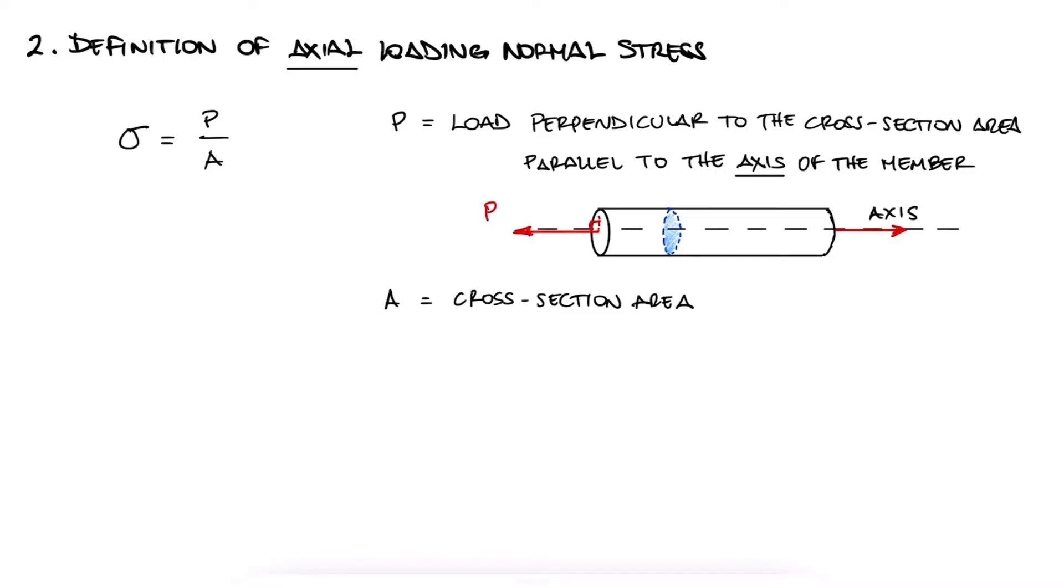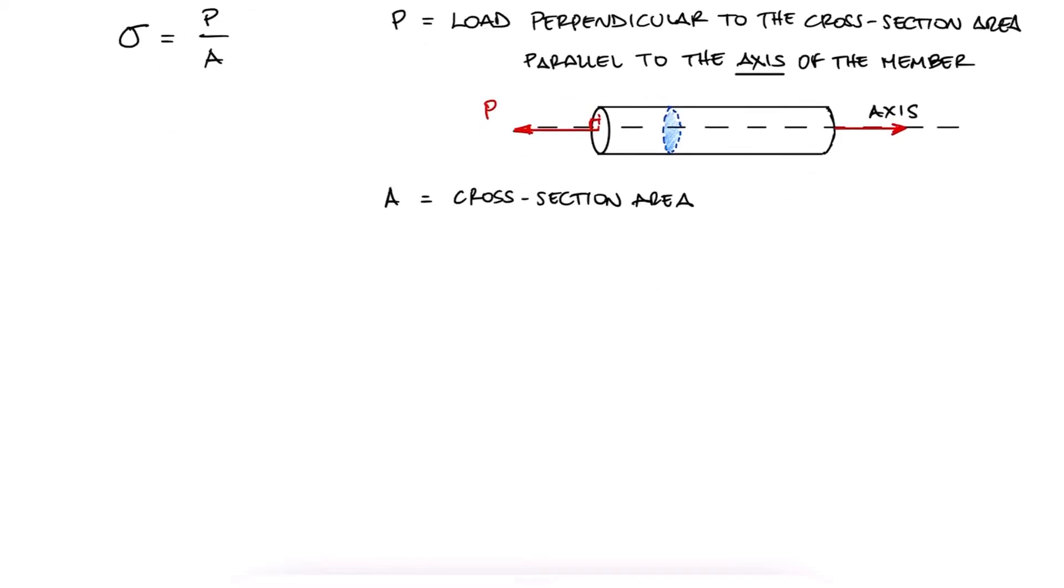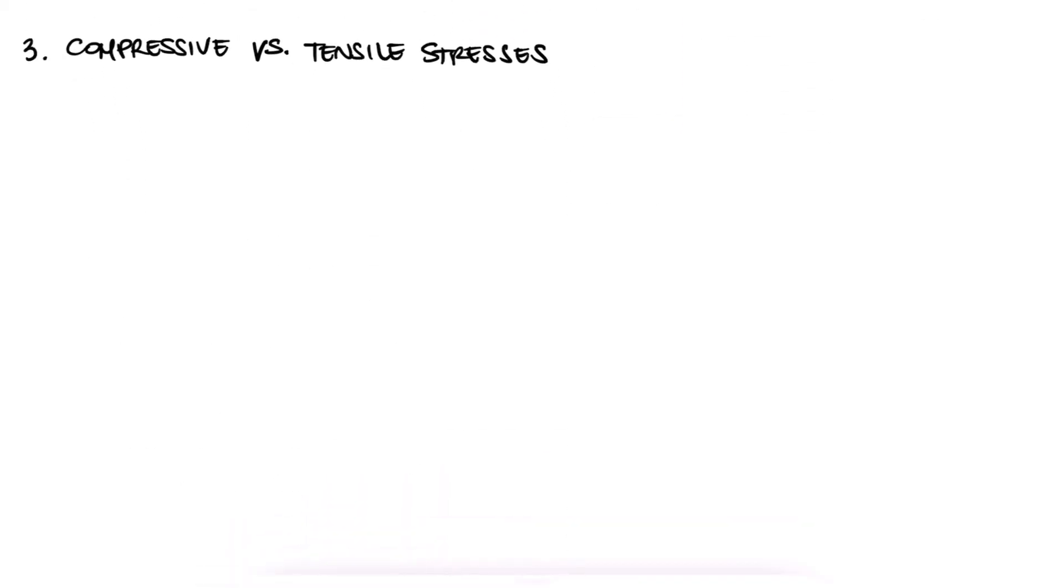But for most of the structures we analyze here, we'll have members, or worst-case scenario, sections of members where the area is constant along the axis. Normal stresses are defined as positive if the load P is generating a tensile stress, that is, a stress that is trying to elongate the axis of the member, and negative if the load P is generating a compressive stress, which is a stress that tries to compress the axis of the member.